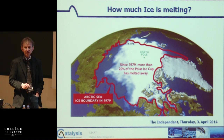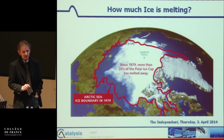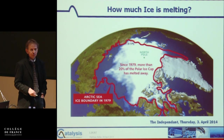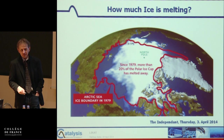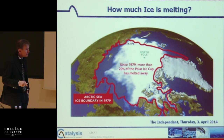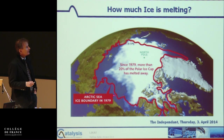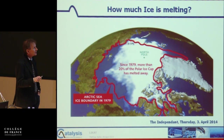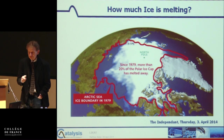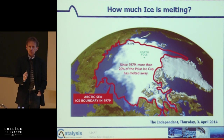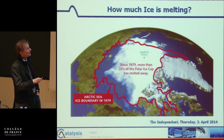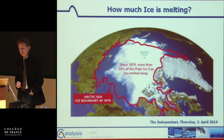What is absolutely clear is that we see a significant increase in the melting of polar ice. This is data I took last week from the news — I was giving a talk in Rennes at a conference. We can really see the Arctic ice boundary from 1979, and since then 20% of the polar ice cap has melted away.